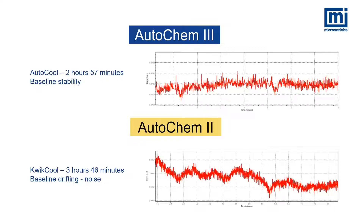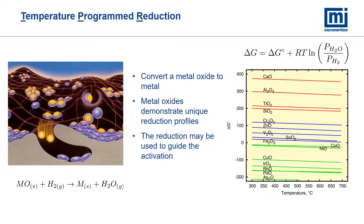At this point I will pass it over to Hong, who will continue the presentation. Thank you Chris. Another possible characterization method is temperature program reduction, which converts a metal oxide to metal. Typical reducing gas is hydrogen and argon, and water is formed. A linear temperature ramp rate is applied to the sample and as the temperature increases, we see that the reduction is occurring.